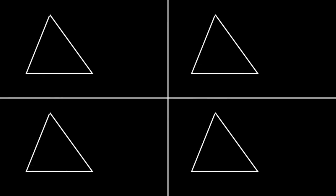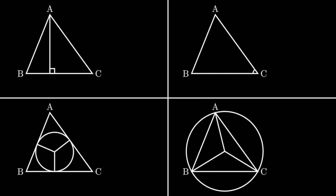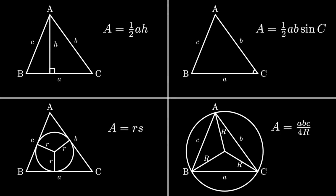There are many ways to find the area of a triangle. There's one-half base times height, one-half ab sine c, rs, and abc over 4r. All these theorems have nice proofs requiring only a few lines of algebra. But what if you wanted to find the area with only the side lengths?